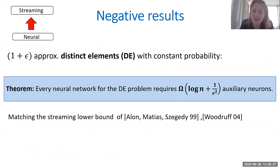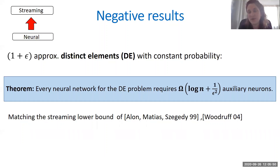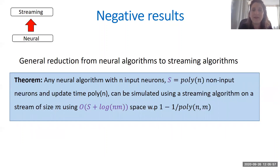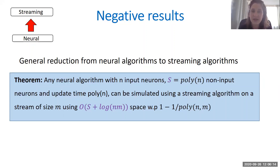Turning to the other direction, first we gave a neural lower bound for the distinct elements problem that matches the streaming lower bound, where this is obtained using a reduction to communication complexity protocols that mimics the reductions from the streaming setting. And more generally, we gave a general reduction that takes any neural algorithm with space S — where we assume S is polynomial in the input size — and translates it into a streaming algorithm that, given a stream of size m, uses space S plus a logarithmic additive factor in n times m. This reduction succeeds with high probability.